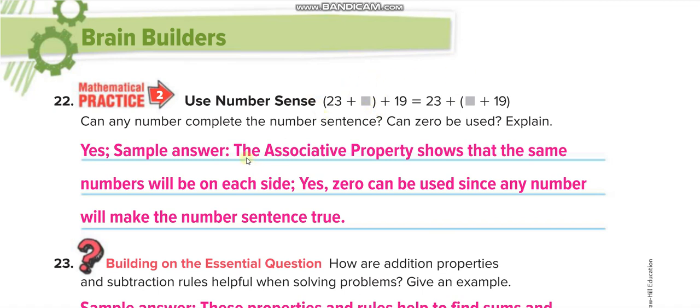This is, you can see from the groups, the associative property shows that the same numbers will be on each side. We have 23, we have 23, we have 19, we have 19. Now the dash is at the same place, so we can fill any number. Yes, 0 can be used since any number will make the number sentence true.